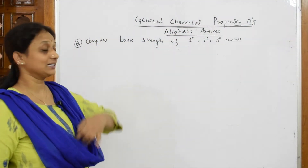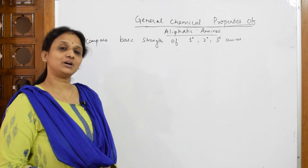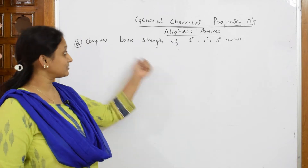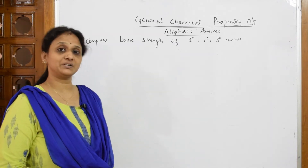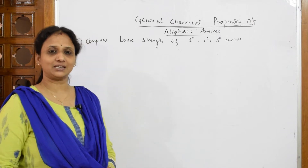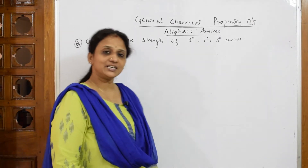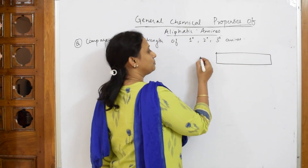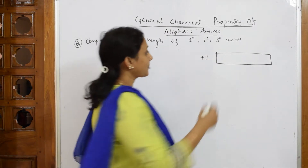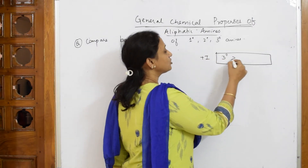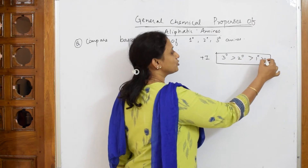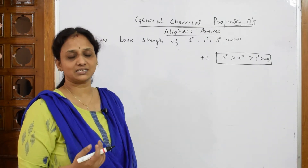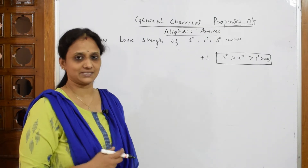Let us come back and learn one more concept. Till now I taught you based on PKB value, then based on alkyl group. Now suppose this question is asked: compare the basic strength of primary, secondary, tertiary amines. Based on the +I effect, that is the electron releasing effect, tertiary is more basic than secondary, more basic than primary, which is more basic than ammonia, because more alkyl groups means more electron density on nitrogen, so more basicity.